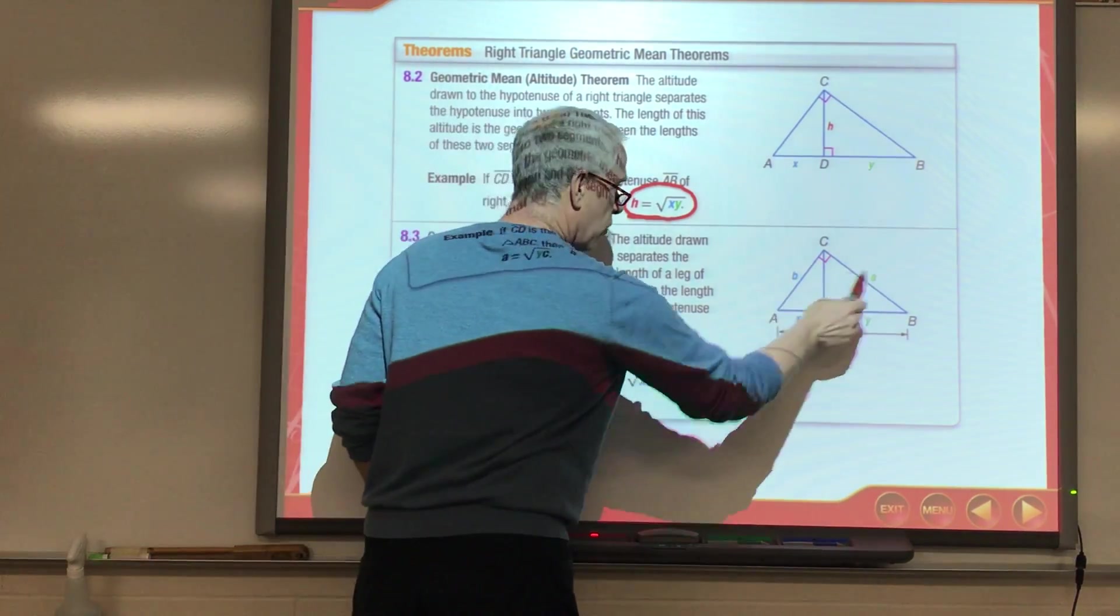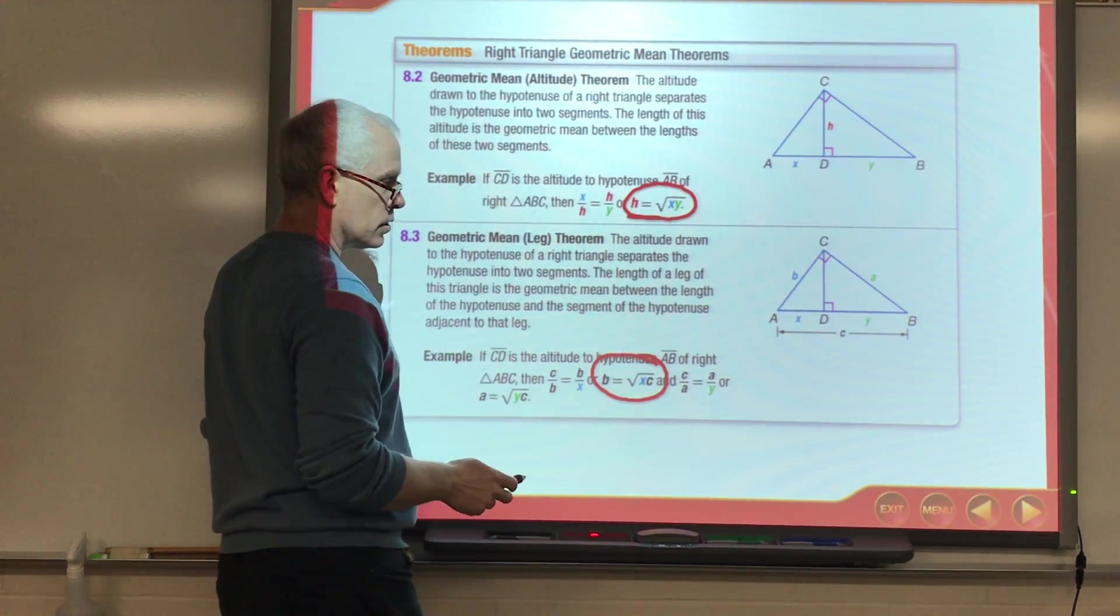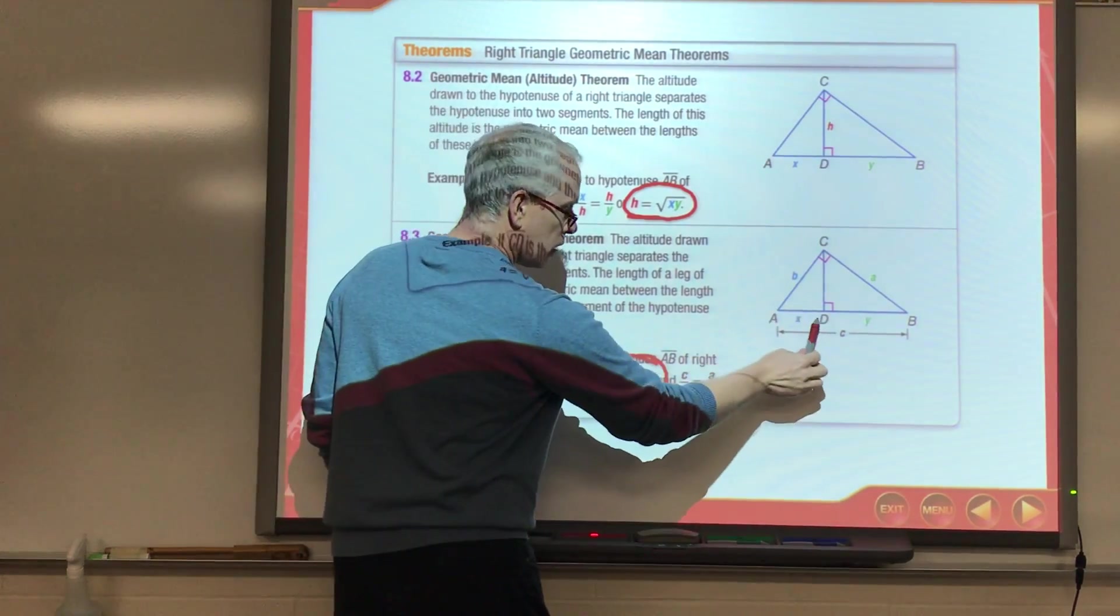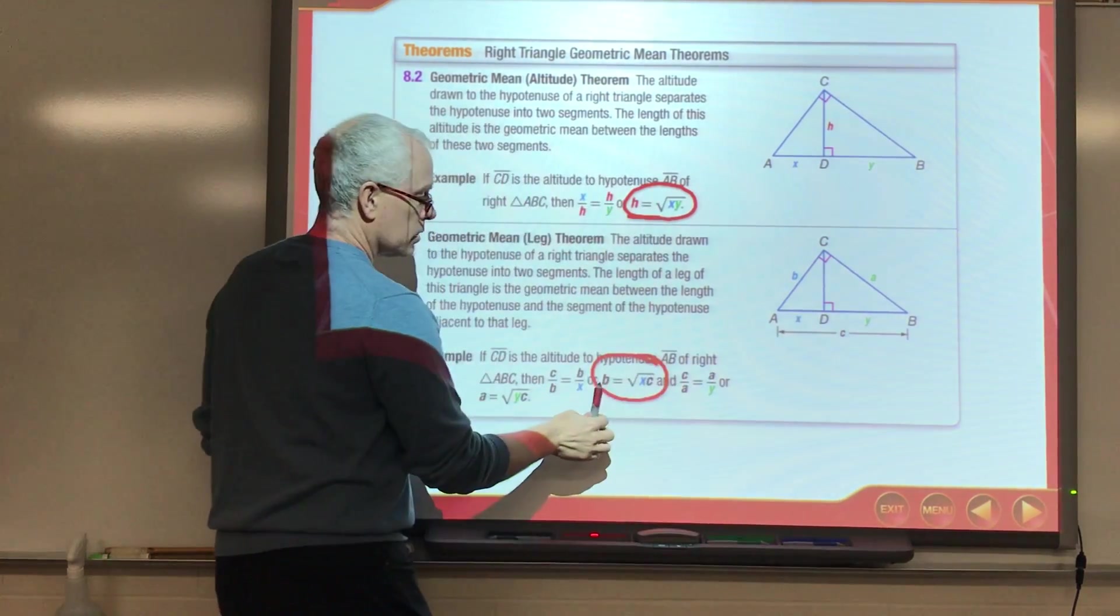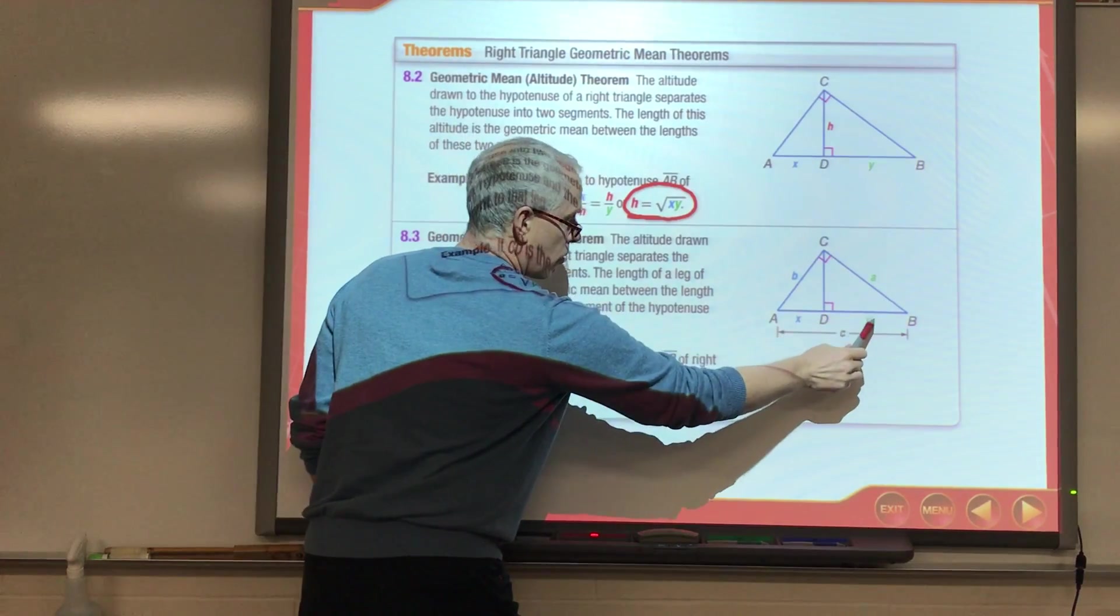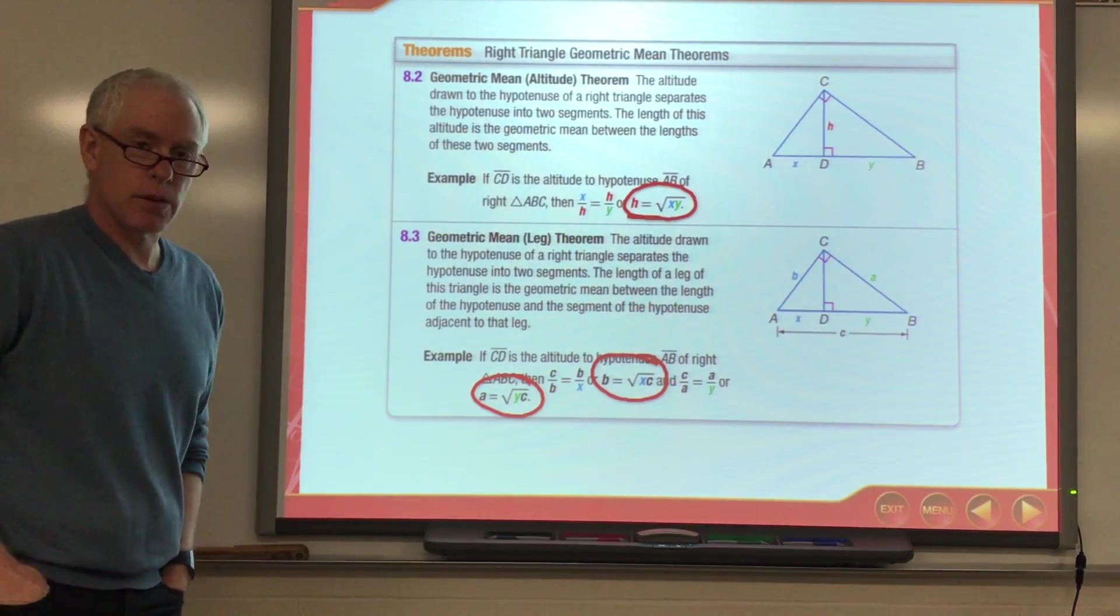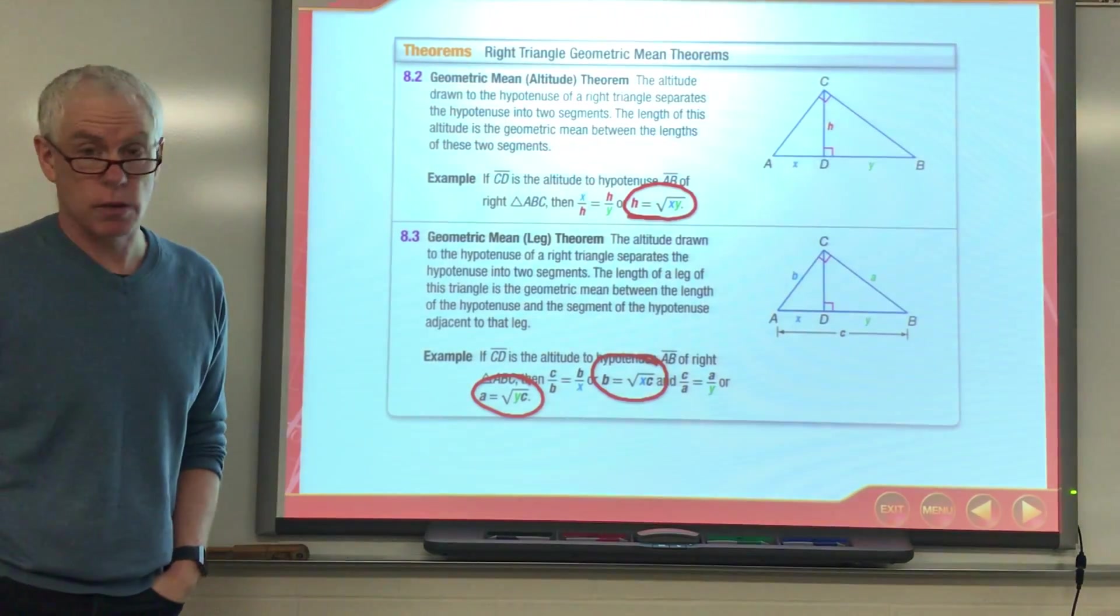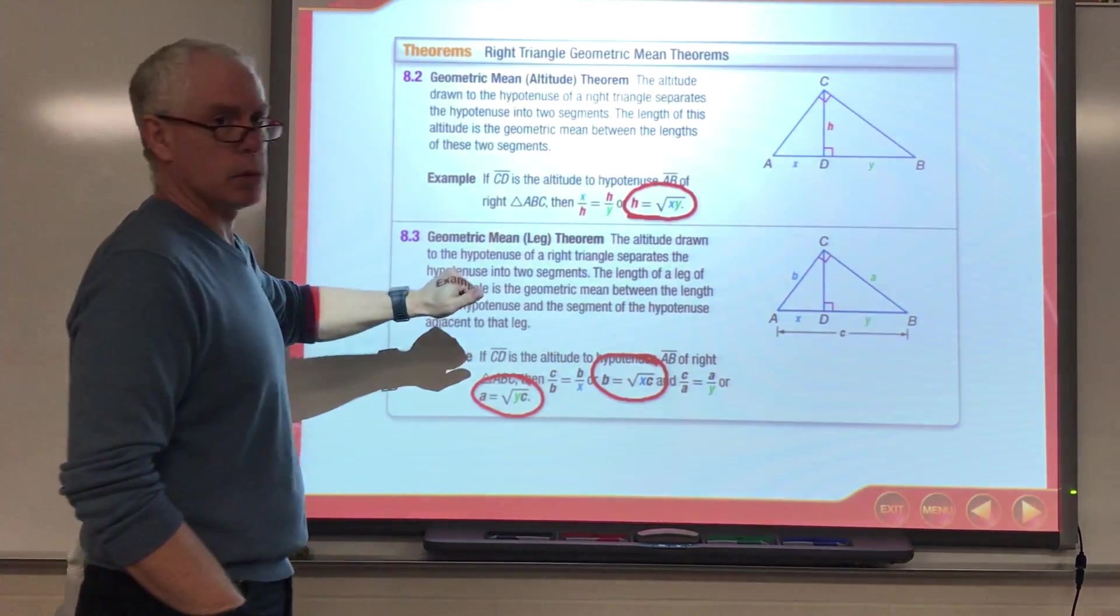If we're trying to solve for one of the outside points, one of the legs is the geometric mean between the part adjacent to it, so X, and the entire hypotenuse. So, B is the square root of X times C. Or, A is the square root of Y times C. Okay. So, take a minute and write those down. You've got to have that in your notes. So, if you need to pause the video and write it down, please do so. Okay. We're going to utilize these quite a bit in the next couple slides.